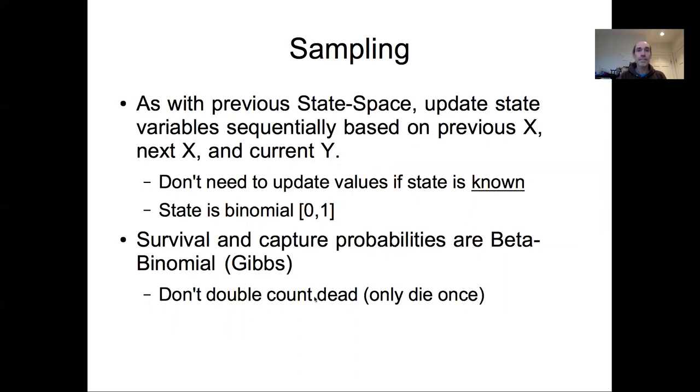So if we put a beta prior on our survival and capture probabilities, and then we have a binomial, which is just a special case of Bernoulli, we can actually Gibbs sample both the survival probabilities and the capture probabilities because we just have a beta-binomial conjugacy. And this note, make sure that we don't double count the dead because you only die once. So once we infer that an individual is dead, we don't continue on to assess the probability of it staying dead.